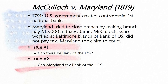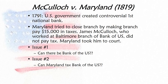McCulloch v. Maryland is a landmark case. The controversy involved the creation of a United States Bank. Several states had a problem with this — they did not think it was a power the government should have. Maryland was one such state, and when the US government opened a branch of the bank in Baltimore, Maryland placed a large tax on that bank to discourage its existence.